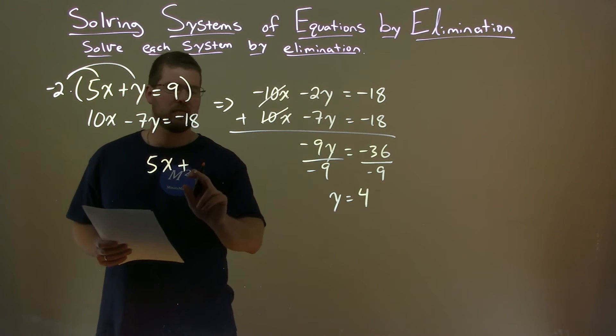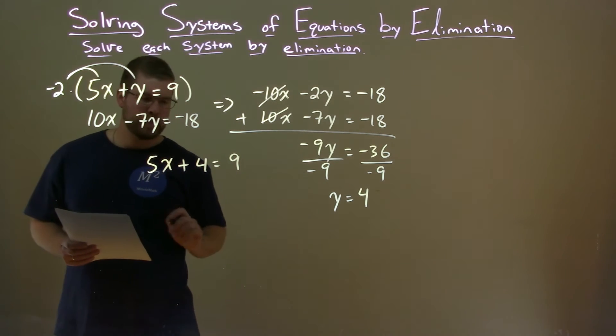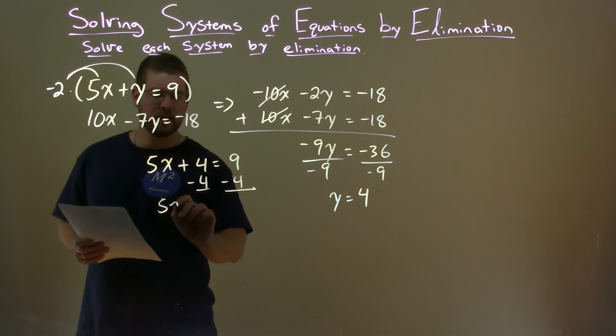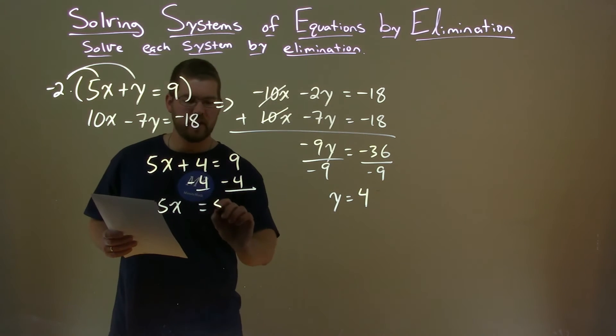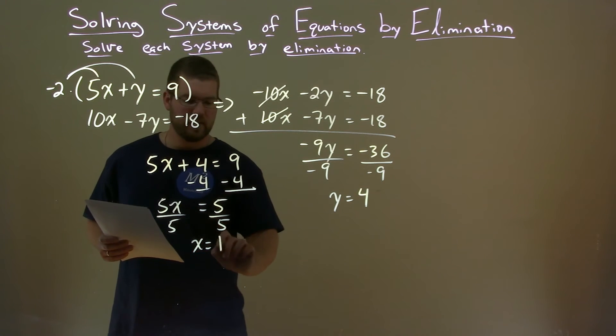5x here plus, instead of y, I'm putting a 4 in, equals 9. Solve for x, subtract 4 from both sides. 5x here equals 9 minus 4, which is 5. Divide both sides by 5, and we're pretty much there. 5 divided by 5 is 1.